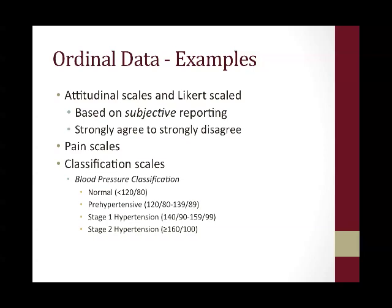Pain scales are another example of ordinal data. Classification scales are another example. You can take something like blood pressure — which would be considered interval ratio data — and divide it into categories. So normal blood pressure would be anyone with a blood pressure of less than 120 over 80; pre-hypertensive would be anyone with a blood pressure of 120 over 80 to 139 over 89, and so forth. You're taking a measurement and breaking it into categories that have a natural order, and therefore this is considered ordinal data.